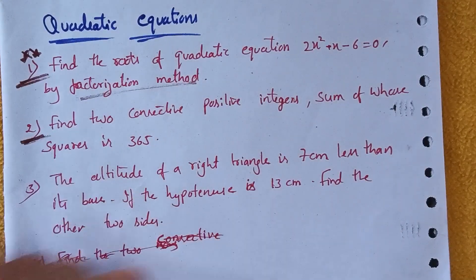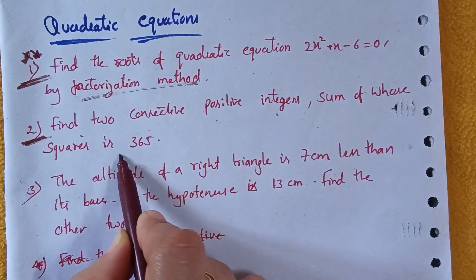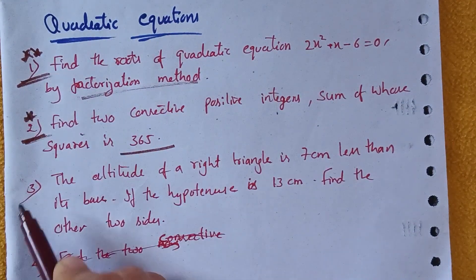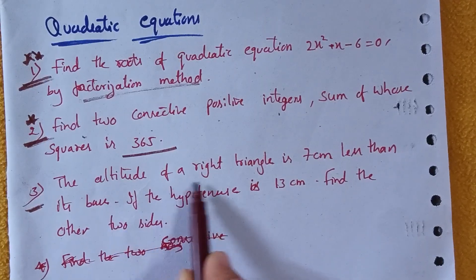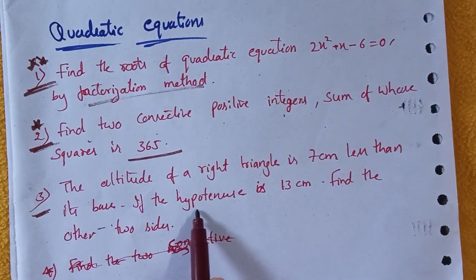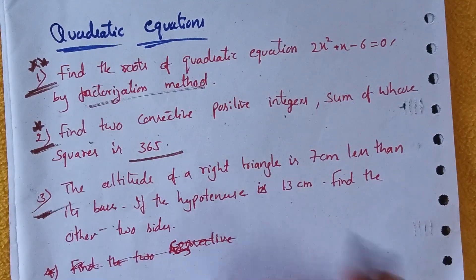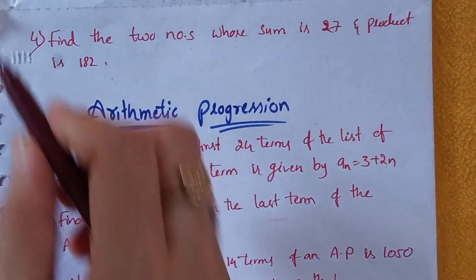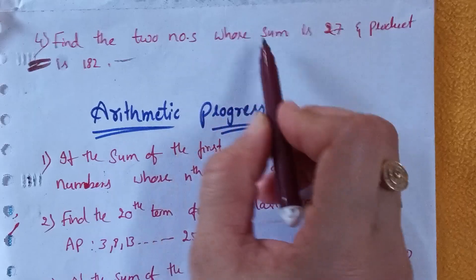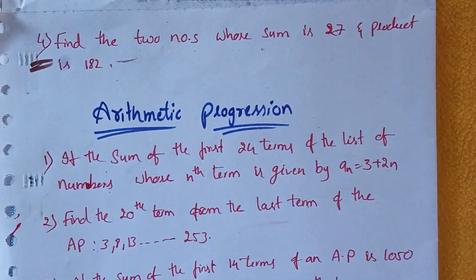Second question from Quadratic Equations: find two consecutive positive integers whose sum of squares is 365. Third question: the altitude of a right triangle is seven centimeters less than its base; if the hypotenuse is 13 centimeters, find the other two sides. Fourth question: find two numbers whose sum is 27 and product is 182.